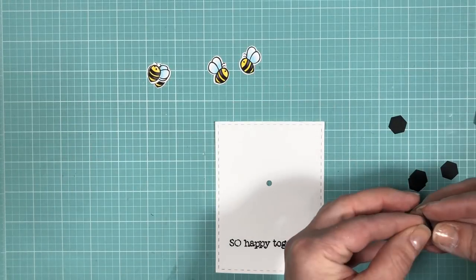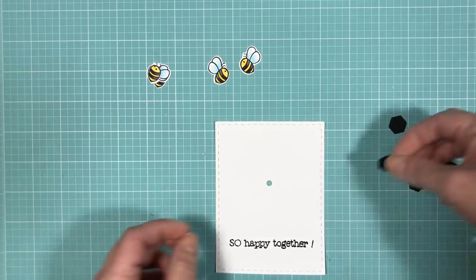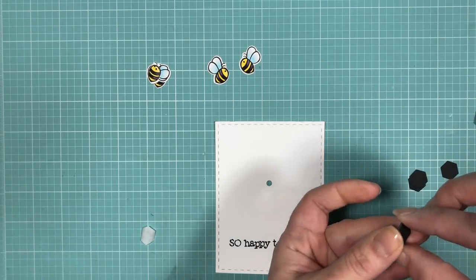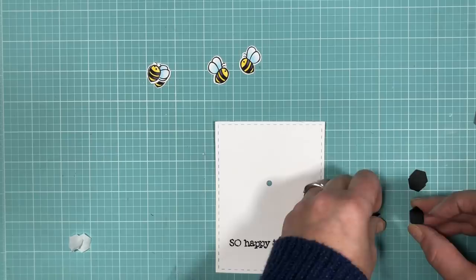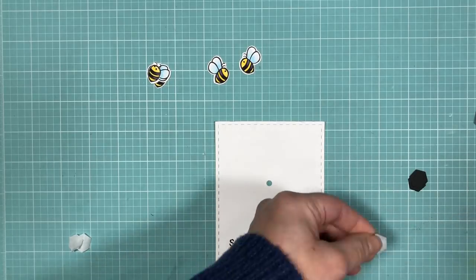Remember that sticker that I created for the shaker portion? Well these are the negative hexagons from that die. So here I'm just stacking three of them together and I'm just going to take a hole punch and punch through their center.